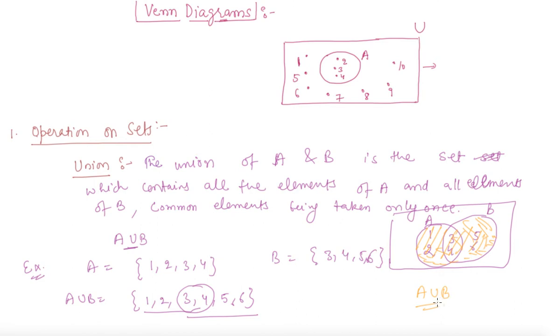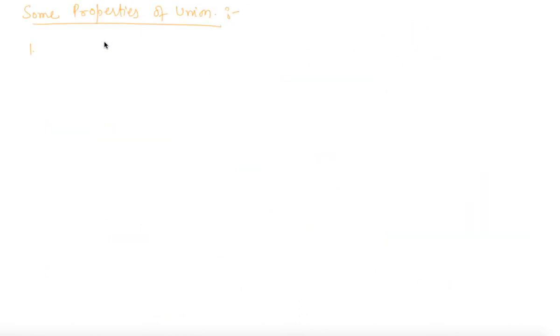Now, let us discuss some properties of union. First is A union B equals B union A, which is also called the commutative law.